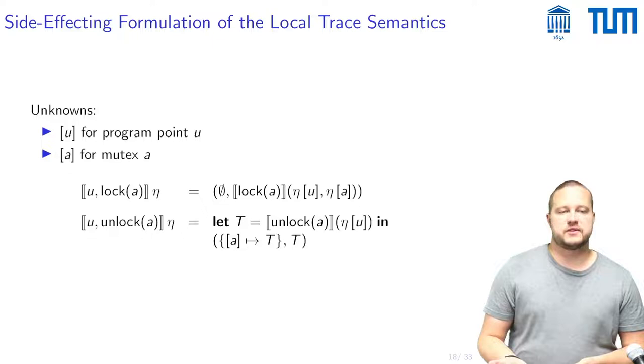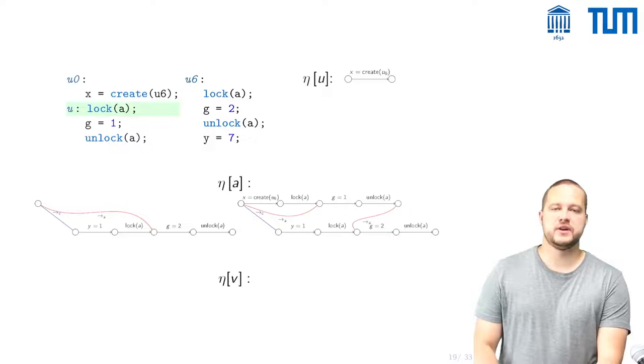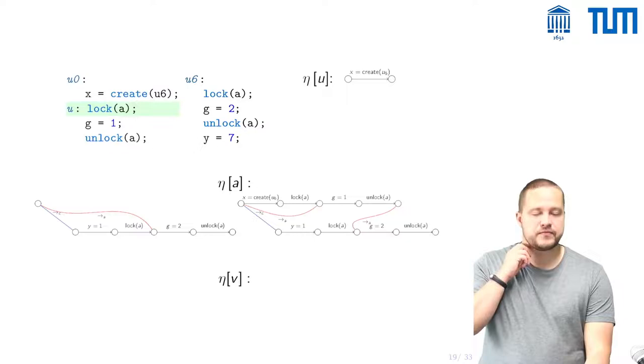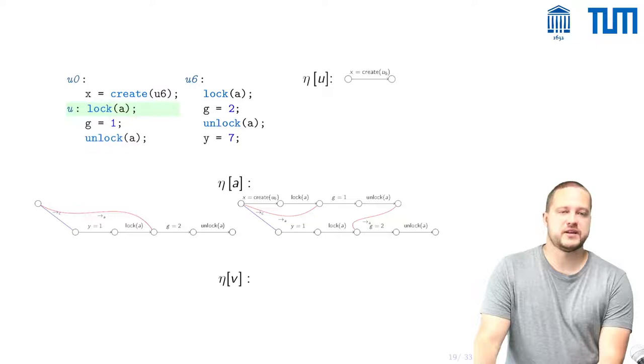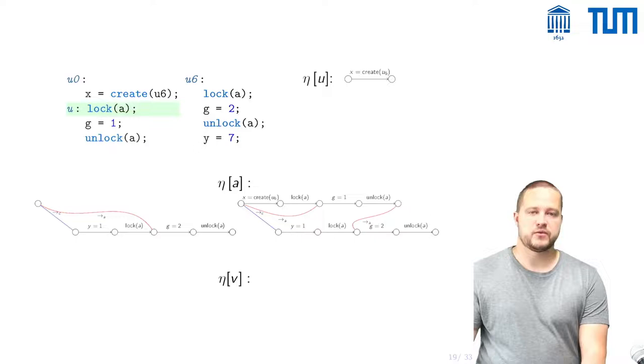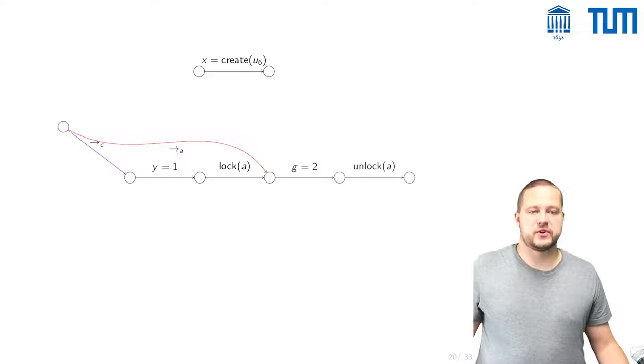Let's take a look at an example. So this is our example program, we have one trace at this program point u and we have two traces stored at this unknown A and then to obtain the traces at this program point v so the immediate successor what one does is takes the local trace at the program point u and combines them with one of the local traces stored at A.